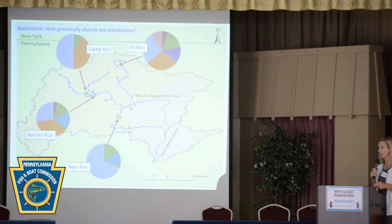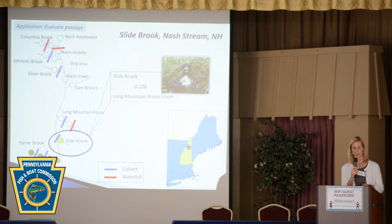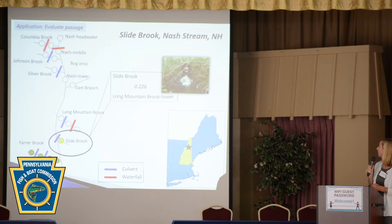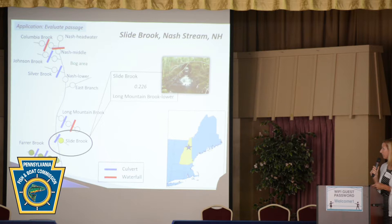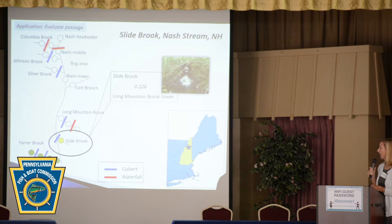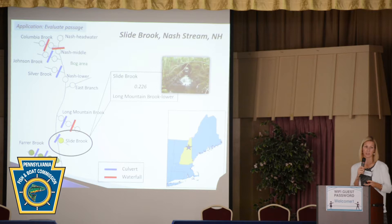Another way we can use genetic information — we've heard a lot today about habitat assessments, culverts, road crossings, and stream crossings — is to evaluate if passage is actually occurring through some of these culverts. Here's an example of a study we did up in New Hampshire on Nash Stream in northern New Hampshire. We looked at a number of sites in tributaries to Nash Stream. This is Slidebrook — at the mouth of Slidebrook there was a pretty substantial culvert. The managers had funding to do some culvert replacement, but as you can see there are quite a few culverts in this watershed, represented by the blue bars, and they couldn't replace all of them.